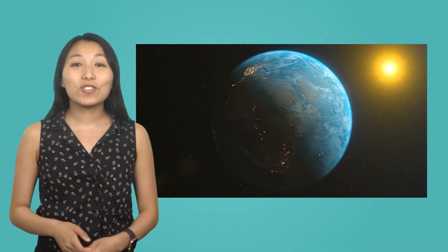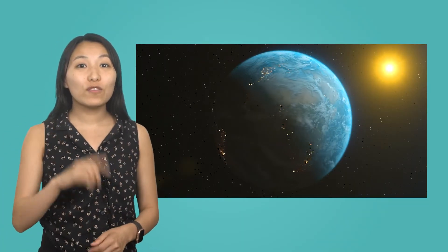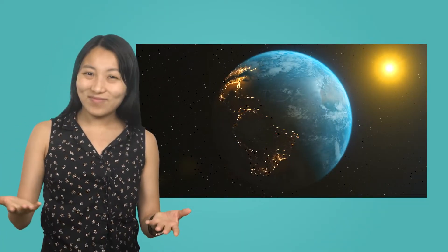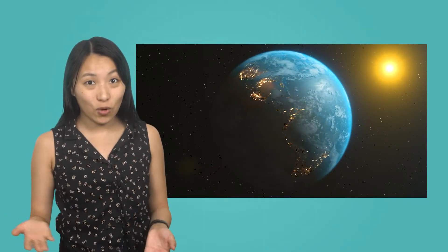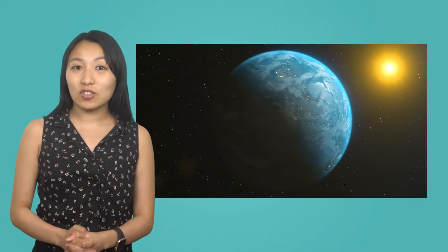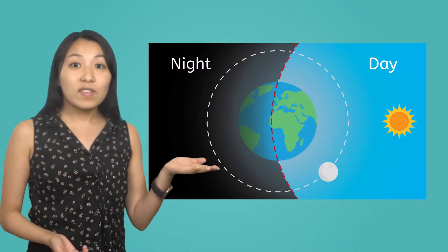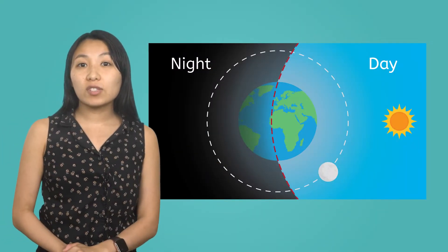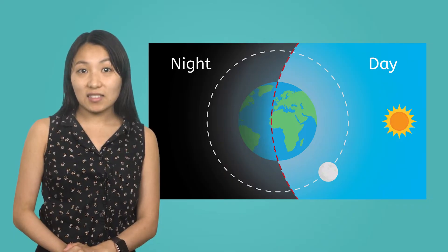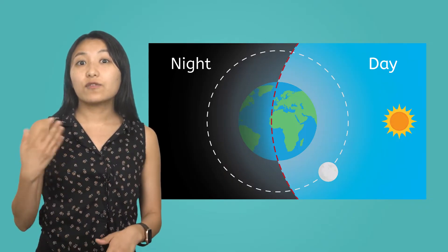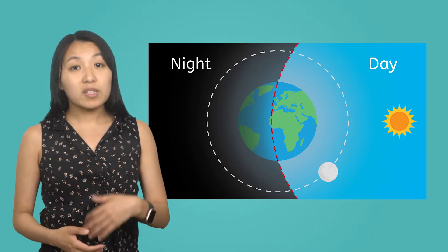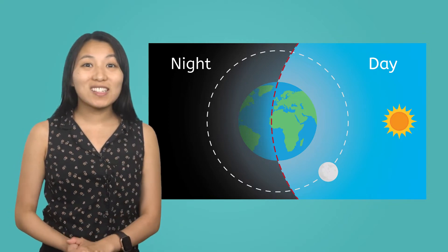How long do you think it takes for Earth to complete one full rotation on its axis? That's right, it takes 24 hours to complete one rotation, which equals one full day. This constant rotation gives us a regular cycle of day and night. The side facing the Sun changes, giving us daylight, while the side facing away experiences night.